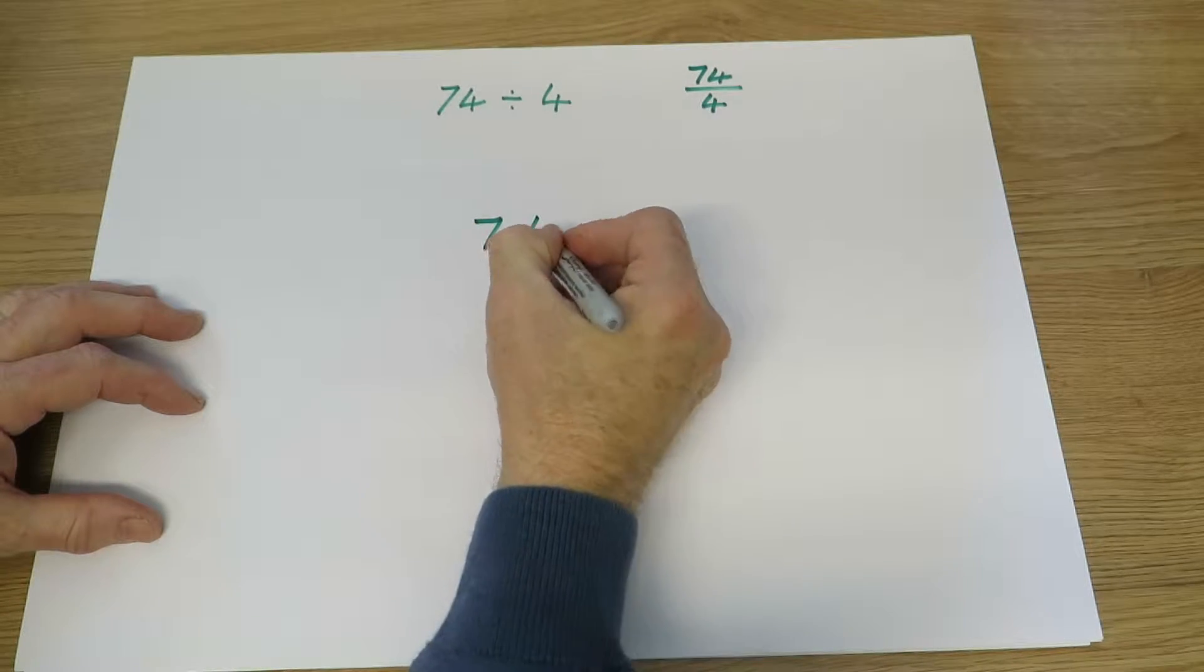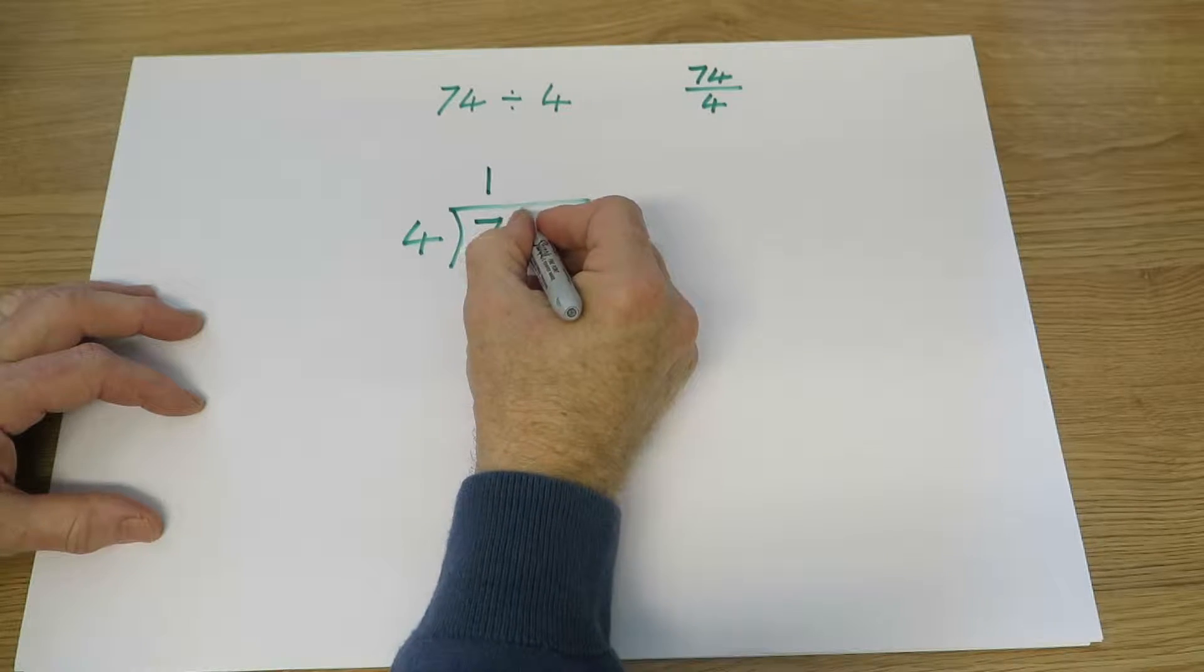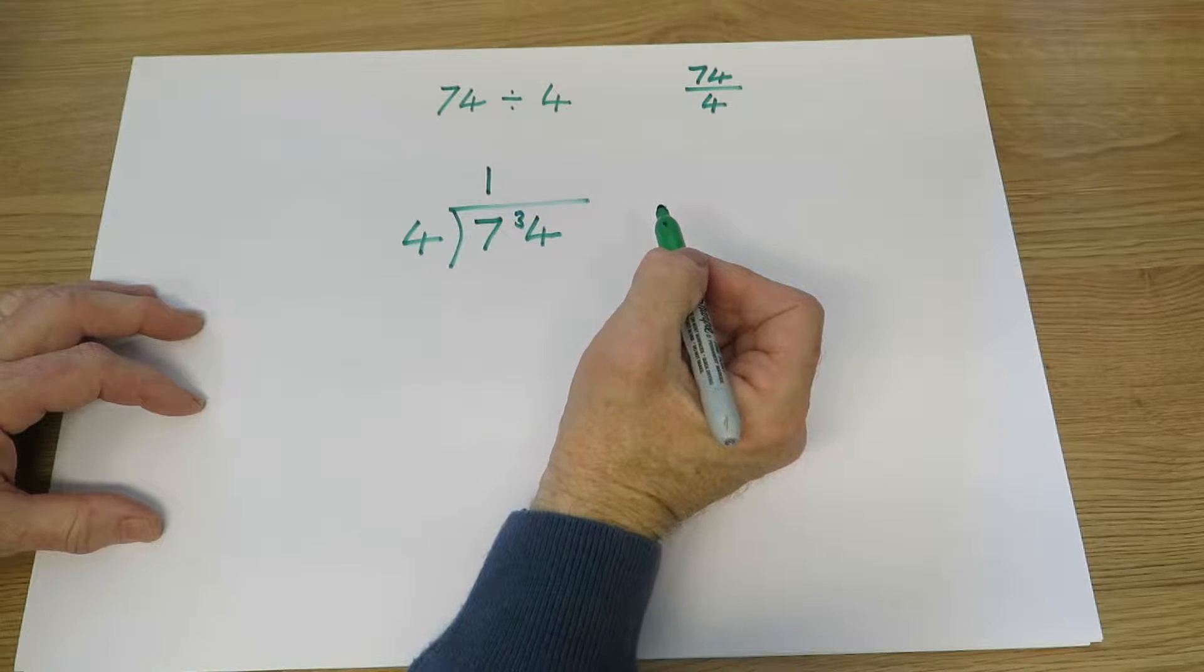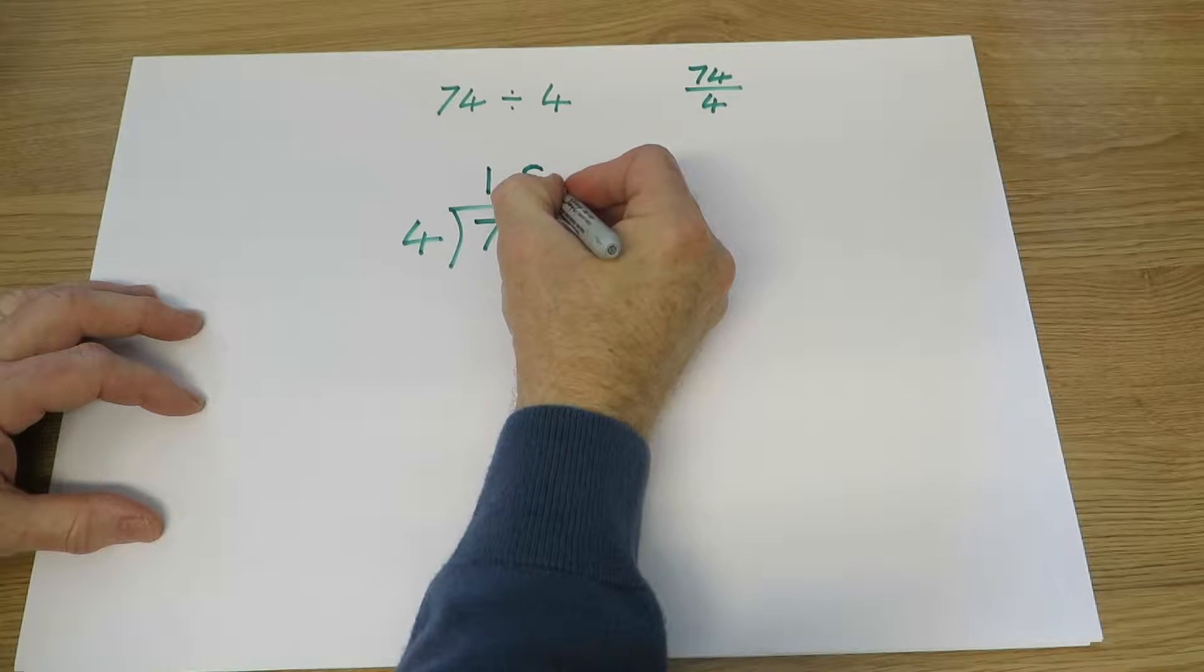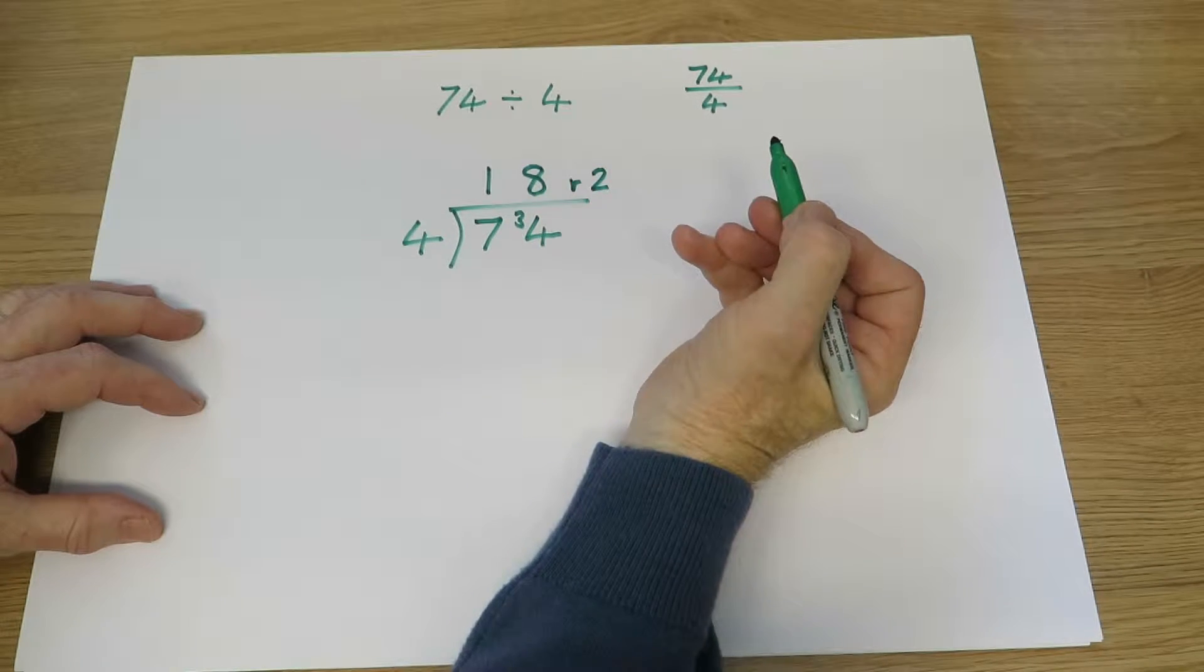So 74 divided by 4. How many fours in 7? There's 1 with 3 left over. How many fours in 34? Well, 8 fours are 32, but there are 2 left. Now we can express that as a remainder. 18 remainder 2.